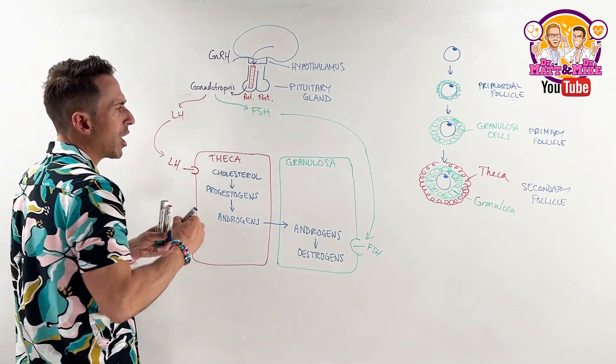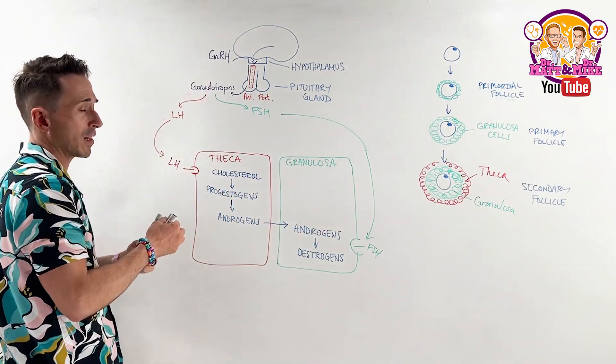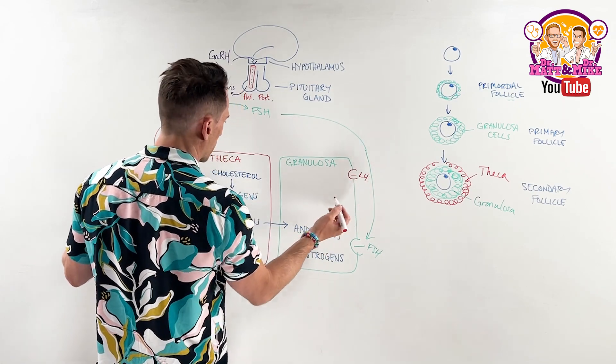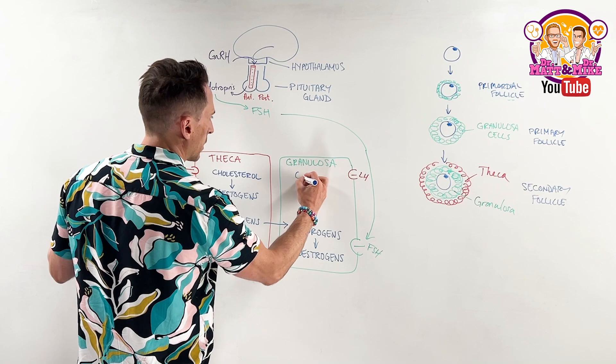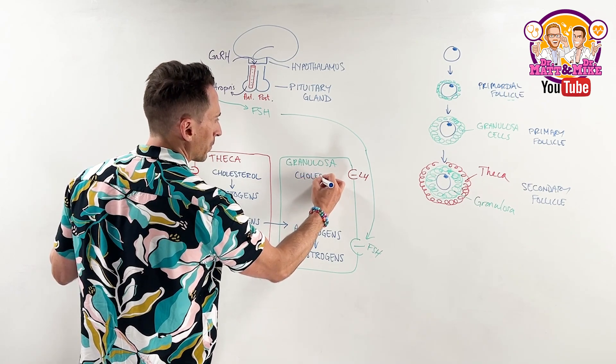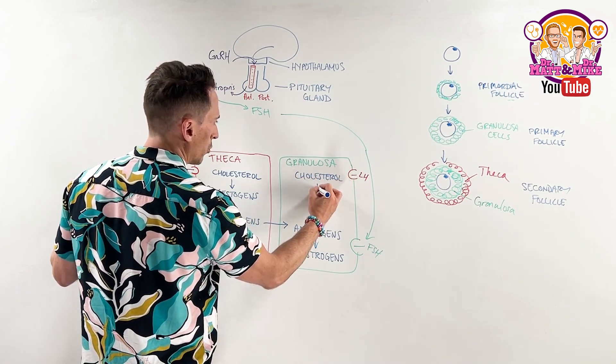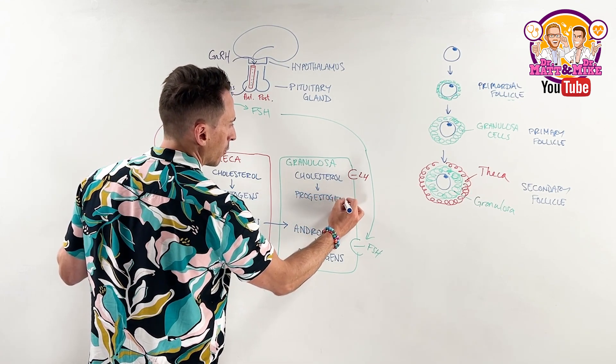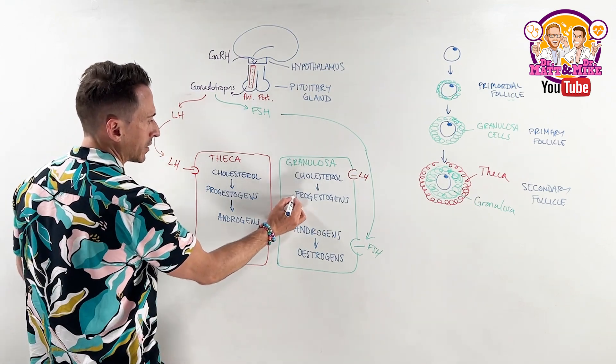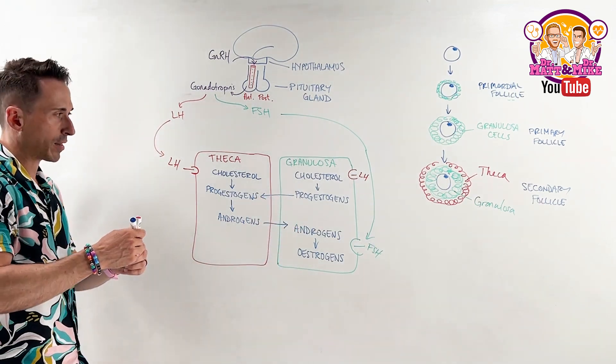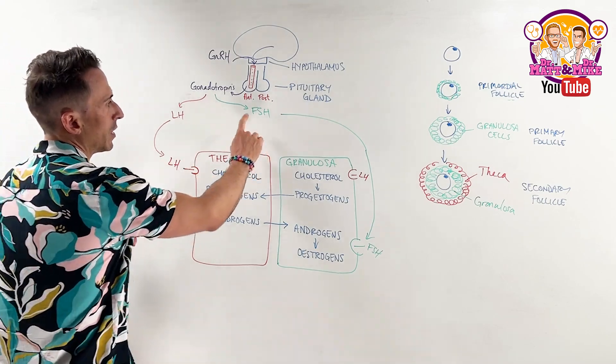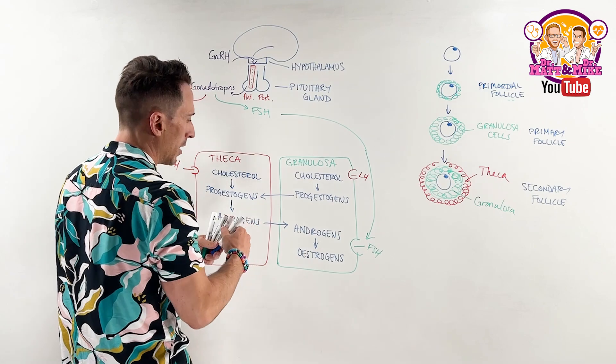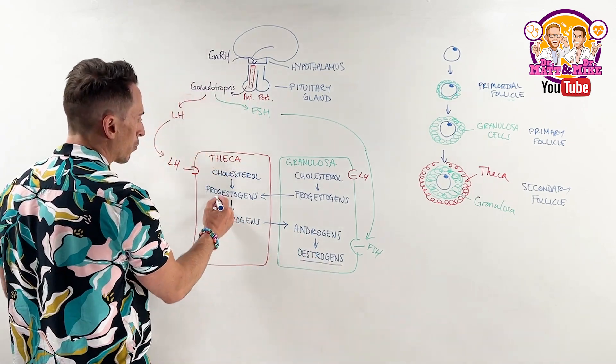LH because of that. Now, importantly, you might say, well, I know that granulosa cells also have receptors for LH, and they do. And you might think that's confusing. But this is just for completion's sake. That can also stimulate cholesterol to turn into the progestogens, but it can't go any further. So it can send those progestogens across to there anyway. So at the end of the day, it's LH, theca cells, FSH, granulosa cells. Ultimately, combined, they work together to produce both estrogens and progestogens.